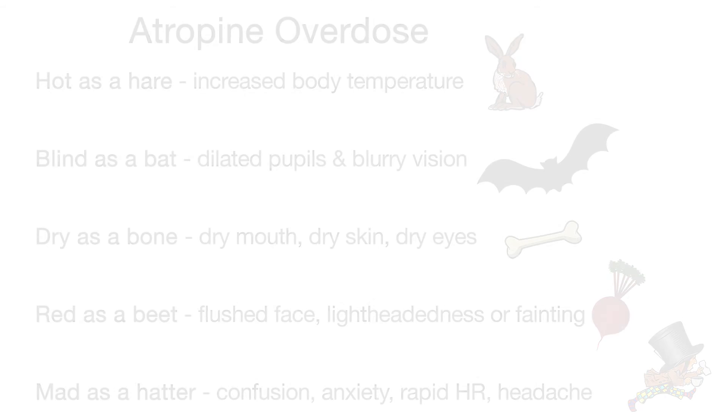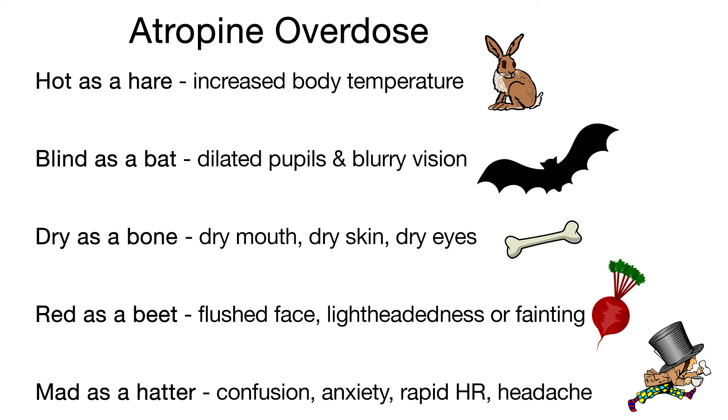Atropine is an anticholinergic used to treat bradycardia, reduce salivation and bronchial secretions before surgery, and as an antidote for overdose of cholinergic drugs or mushroom poisoning. Watch for signs and symptoms of overdose to include the following.